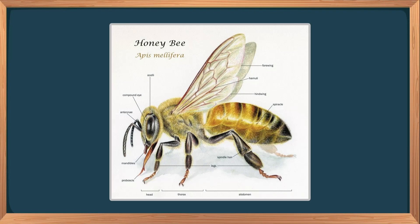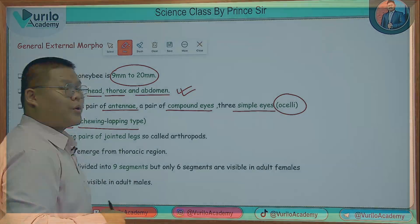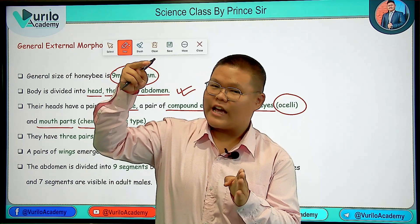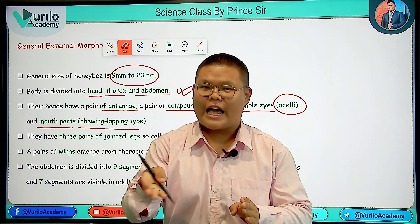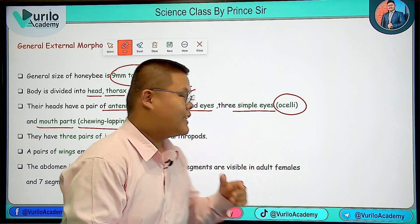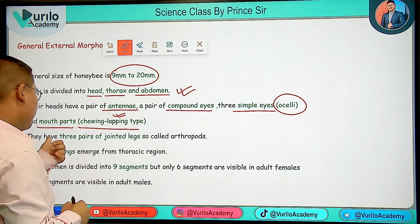A pair of antennae are present for the sensation process, another pair of compound eyes, and three simple eyes are also present.